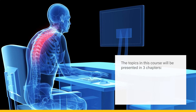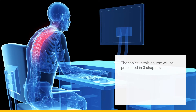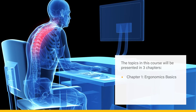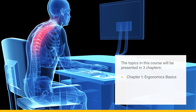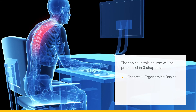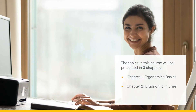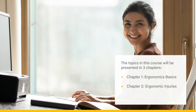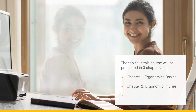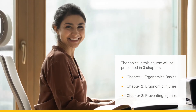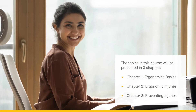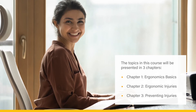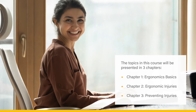The topics in this course will be presented in three chapters. Chapter 1 – Ergonomics Basics: we'll define what office ergonomics is and walk through the benefits of pursuing good ergonomics in the workplace. Chapter 2 – Ergonomic Injuries: we'll define the two main negative effects of poor ergonomics. And Chapter 3 – Preventing Injuries: we'll go through how to craft a proper ergonomic workspace and what techniques you can use to negate the negative effects of your workplace.